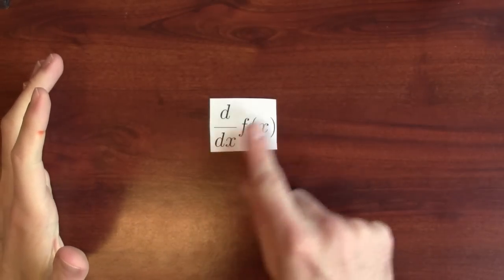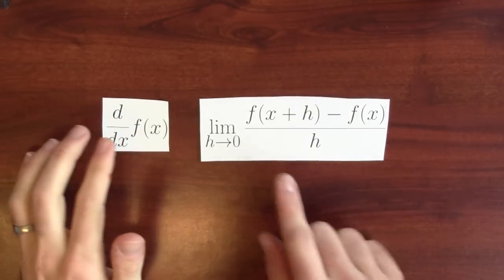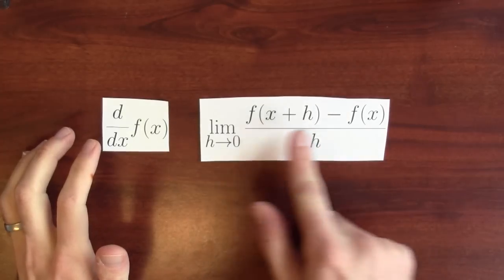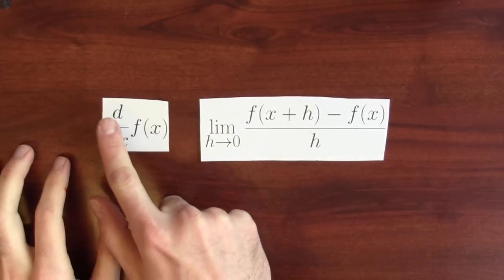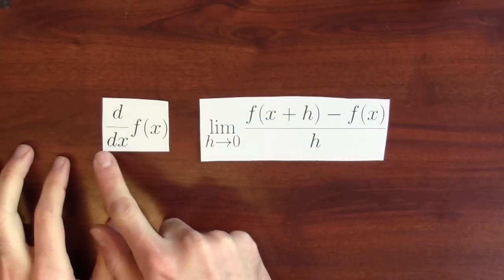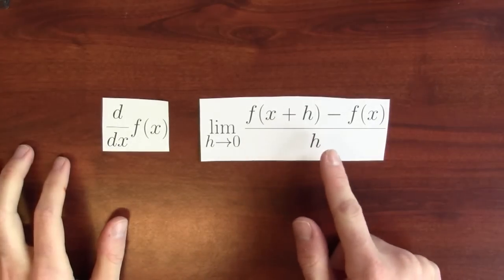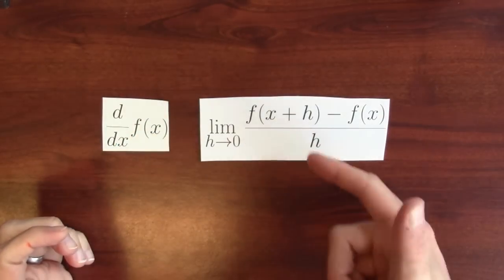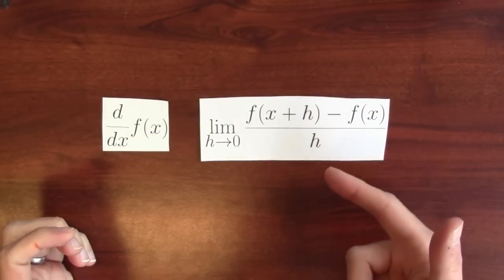There's upsides and downsides to these various choices of notation. For instance, here's a huge upside to this d/dx notation. It's really emphasizing that the derivative is a ratio. It looks like df, the change in the output, over dx, the change in the input. Somehow revealing a little bit of how the derivative is actually defined.